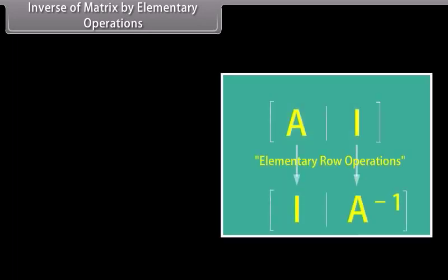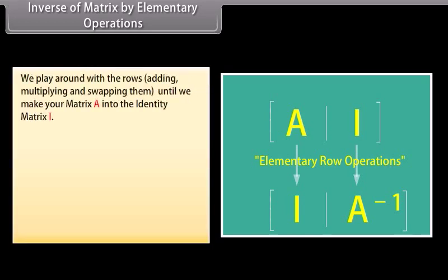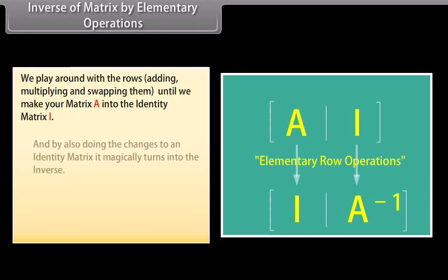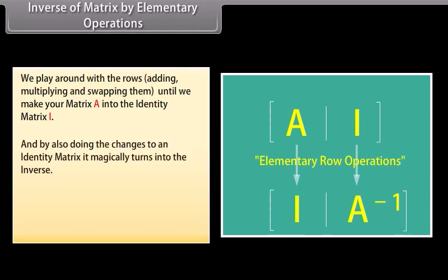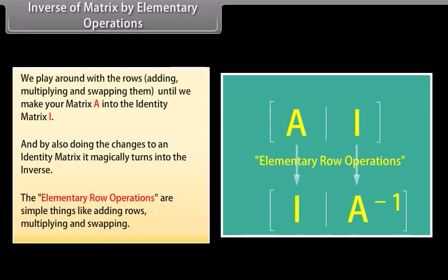Inverse of a matrix by elementary operations: This is a fun way to find the inverse of a matrix. We play around with the rows — adding, multiplying, and swapping them — until we make matrix A into the identity matrix I. By also doing the changes to an identity matrix, it magically turns into the inverse. The elementary row operations are simple things like adding rows, multiplying, and swapping. Let us go through an example in the next screen.